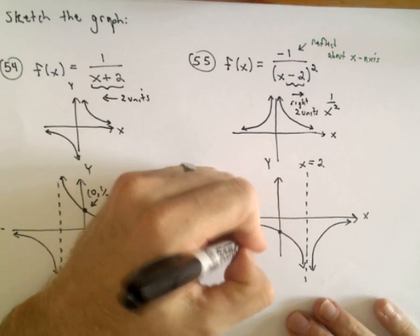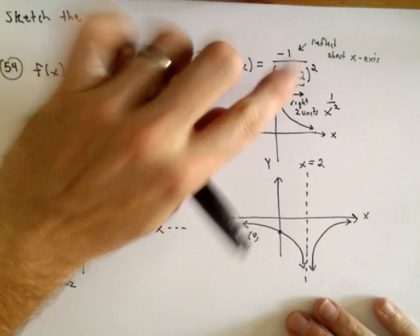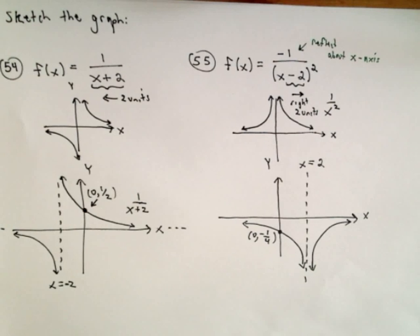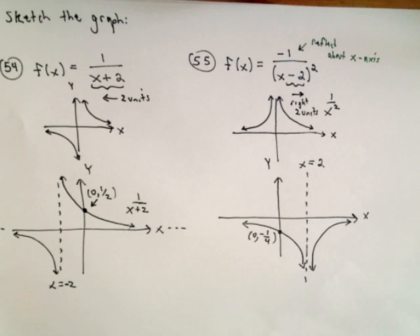If we plug in x equals 0, we would have... I guess we would get negative 1 fourth. So, that would be the point 0 comma negative 1 fourth. And again, that would be the graph of negative 1 over x minus 2 quantity squared.